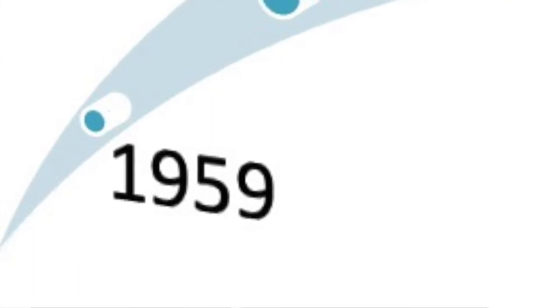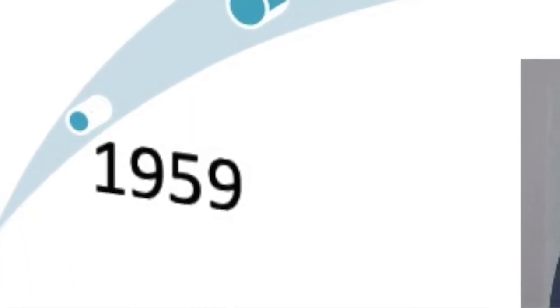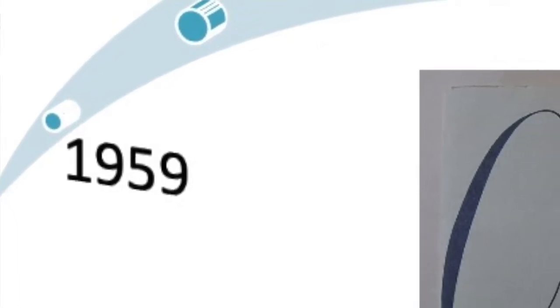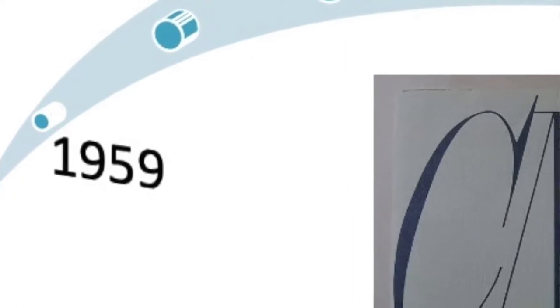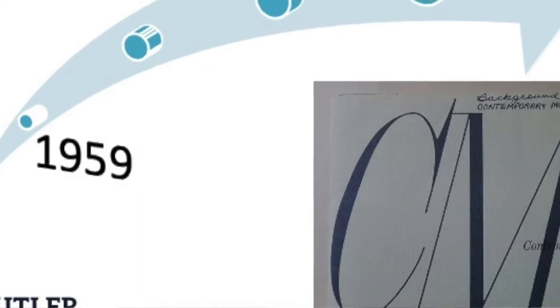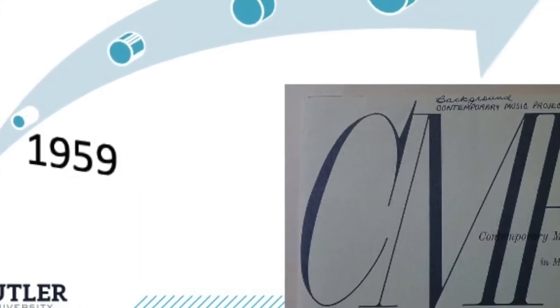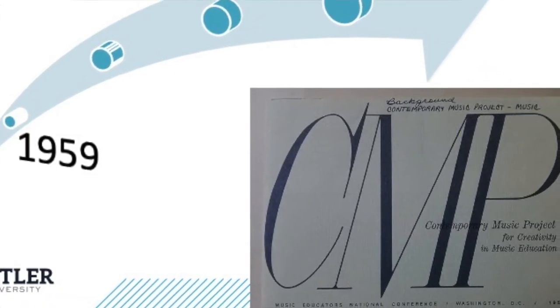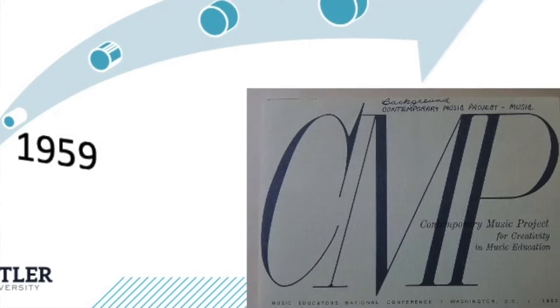In 1959 the Contemporary Music Project is formed, receiving one of the largest grants to date for music education — a 1.6 million dollar grant over 15 years from the Ford Foundation. This was intended to support a new form of music education that embraced not only performance but other ways of music making, including a composer-in-residence program for public schools, institutes for music focused on contemporary music education, and notably the Comprehensive Musicianship Project.